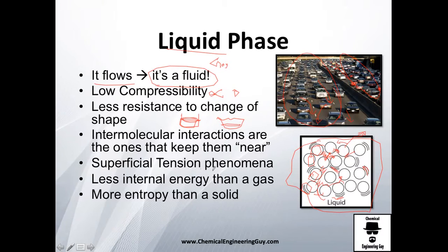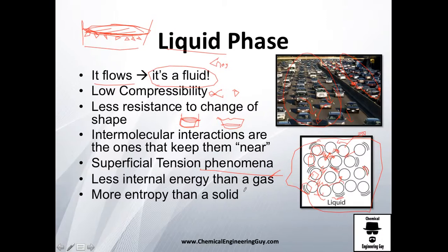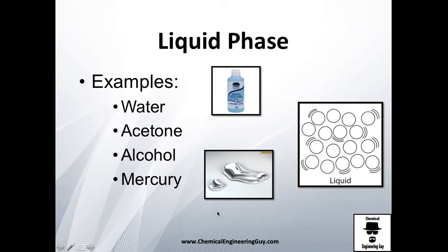The intermolecular interactions in liquids keep the molecules near each other, which is why they don't evaporate freely. Liquids also have the special concept of surface tension — the atoms at the surface in contact with air behave differently from the bulk. Liquids have less internal energy than gases but more than solids, and their entropy is a little more than that of the solid but much less than that of the gas. Some examples are water, acetone, alcohol, and liquid mercury — at 25°C you have liquid mercury.